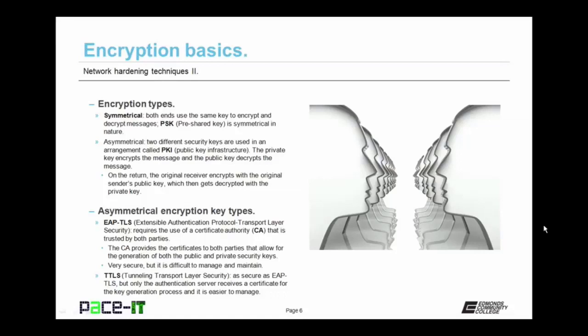There are two basic types of encryption. There's symmetrical encryption, in which both ends of the communication channel use the same key to encrypt and decrypt the message. Pre-shared key, or PSK, is symmetrical in nature. Then there's asymmetrical encryption, in which two different security keys are used in an arrangement called PKI, or public key infrastructure. The private key encrypts the message, and the public key decrypts the message. On the return side, the original receiver encrypts with the original sender's public key, which then gets decrypted with the private key. In this arrangement, the private key cannot decrypt what it encrypted, and the public key cannot decrypt what it encrypted — so it only works if there are two separate keys.